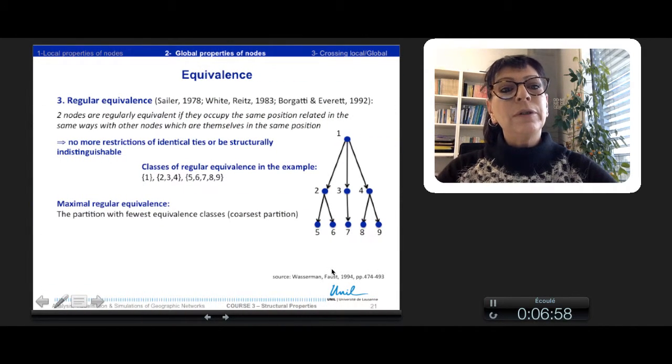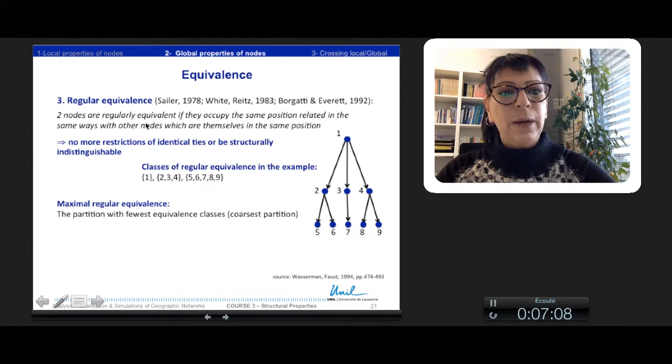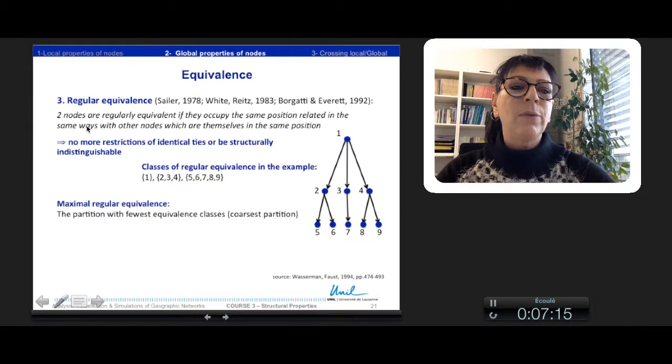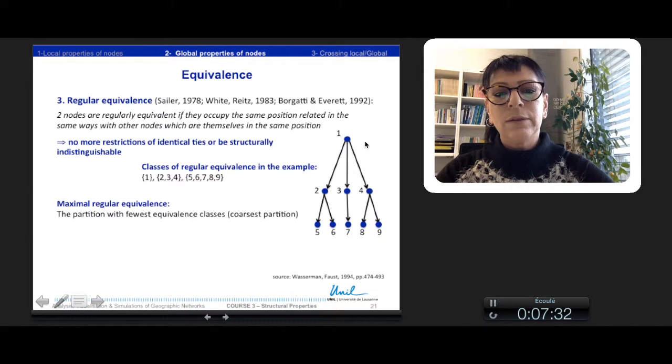A third kind of equivalence is the regular equivalence. It is even less restrictive than the two previous ones. Two nodes are regularly equivalent if they occupy the same position related in the same way with other nodes which are themselves in the same position. So now there is no restriction of identical ties and or to be structurally indistinguishable. So here we've got three classes of equivalence.